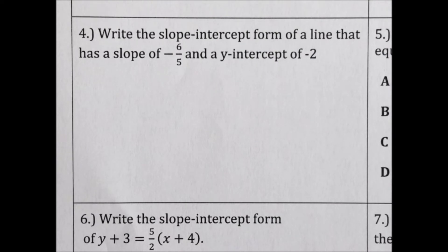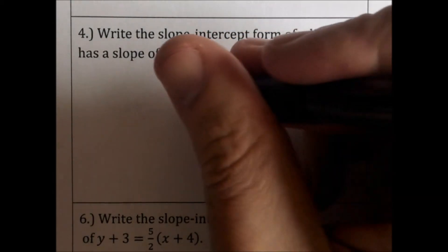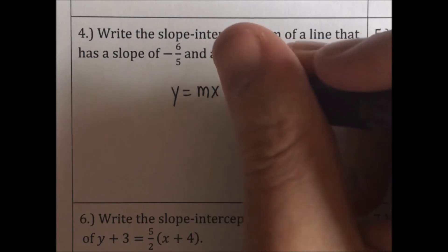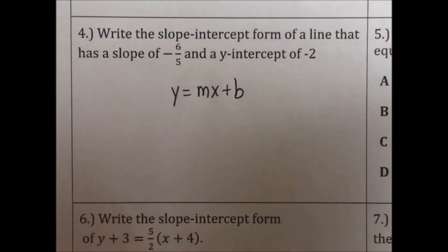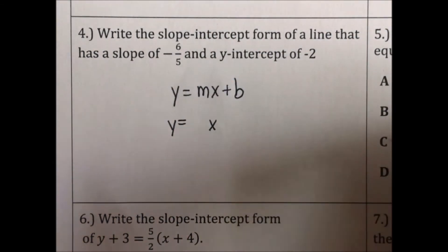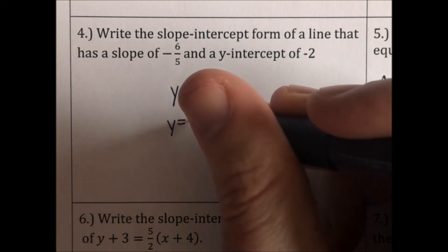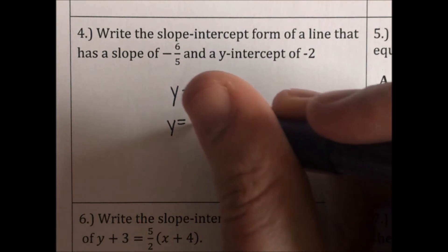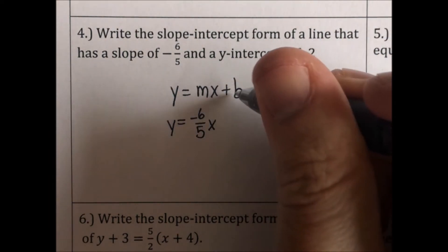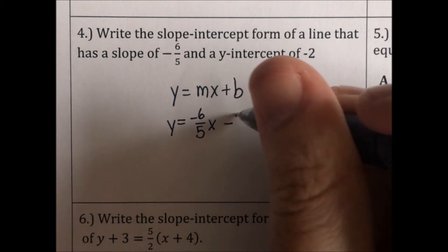Write the slope-intercept form of a line that has a slope of negative 6 fifths and a y-intercept of negative 2. Slope-intercept form is y equals mx plus b. We leave y and x alone, change m to be the slope — negative 6 fifths — and change b to be negative 2.